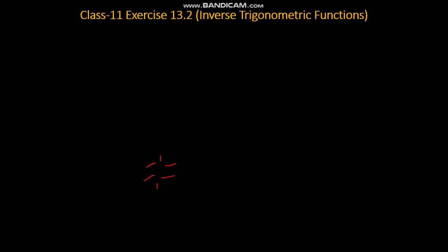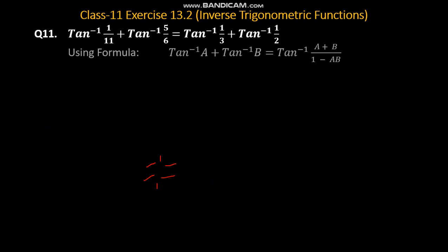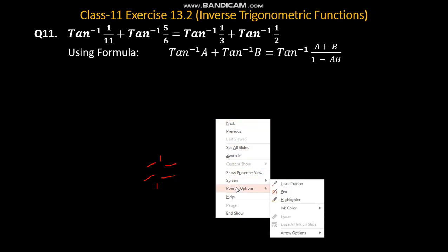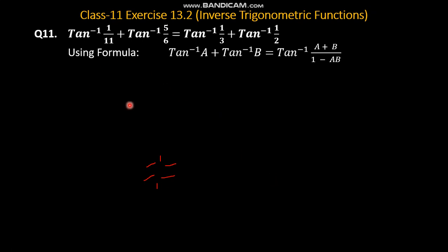Question number 11. We have tan inverse of 1 over 11 plus tan inverse of 5 by 6 is equal to tan inverse 1 over 3 plus tan inverse 1 over 2. On the left hand side and right hand side there are two formulas: tan inverse A plus tan inverse B. We will apply the formula: tan inverse A plus B over 1 minus AB.